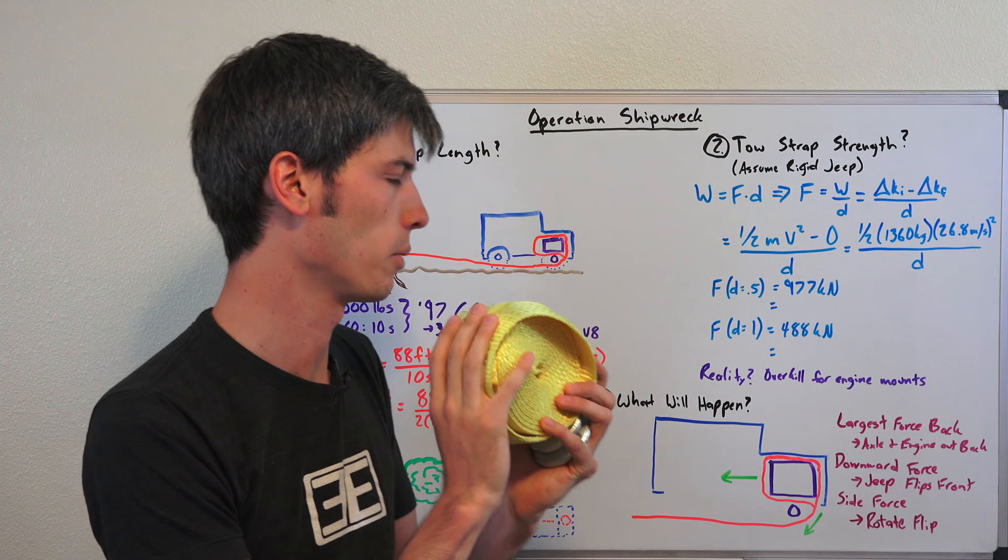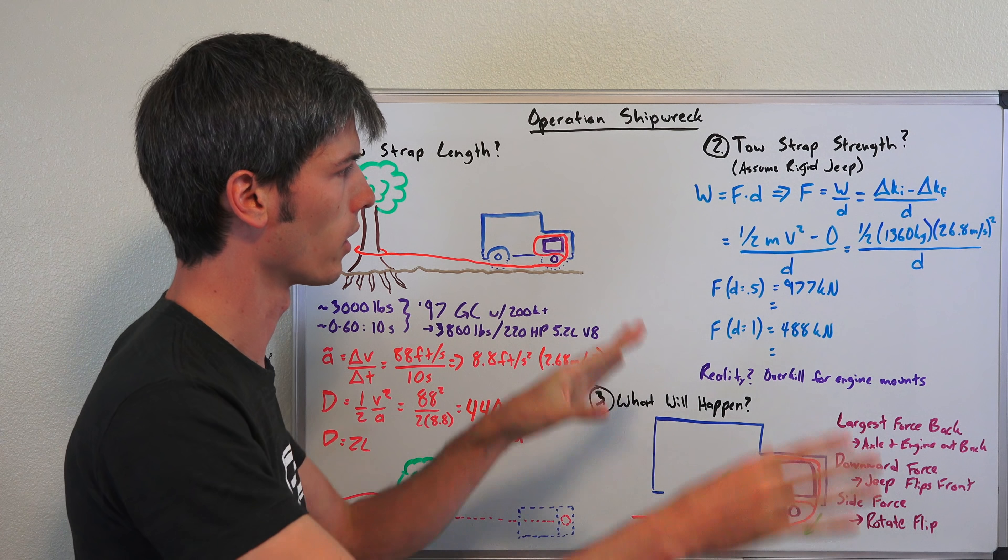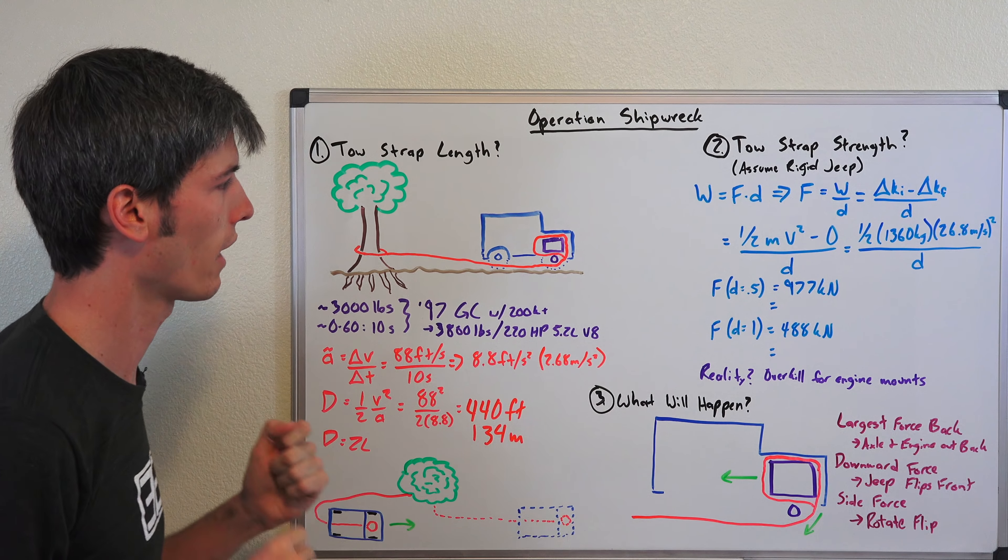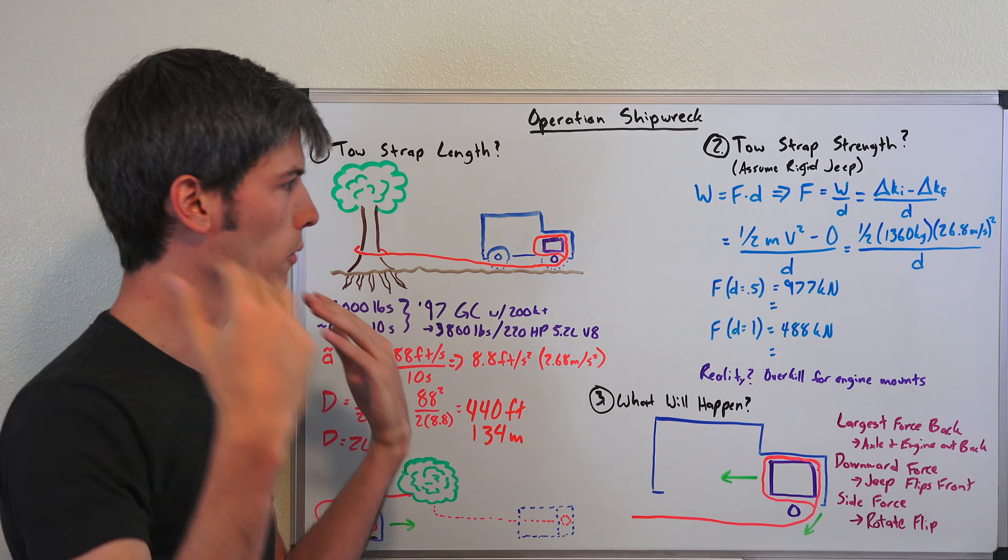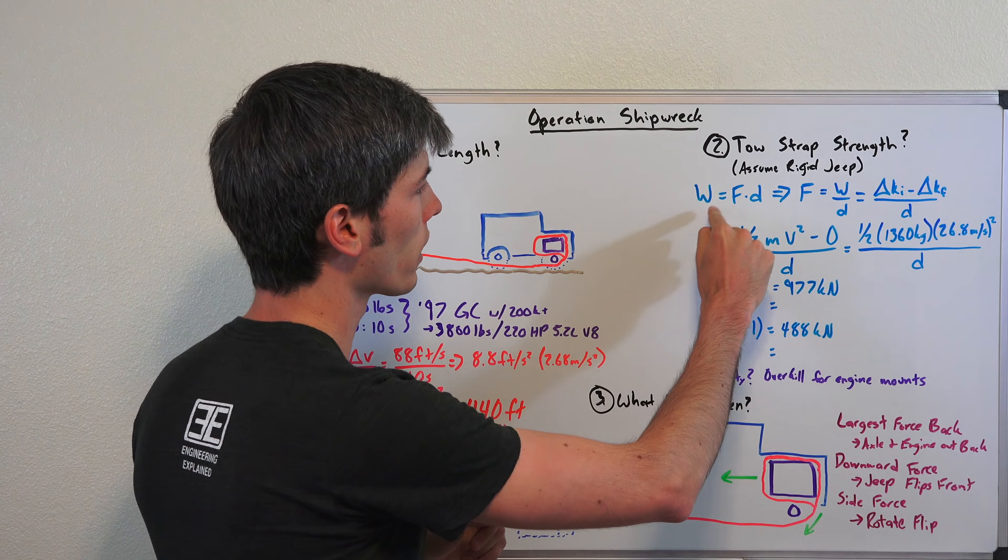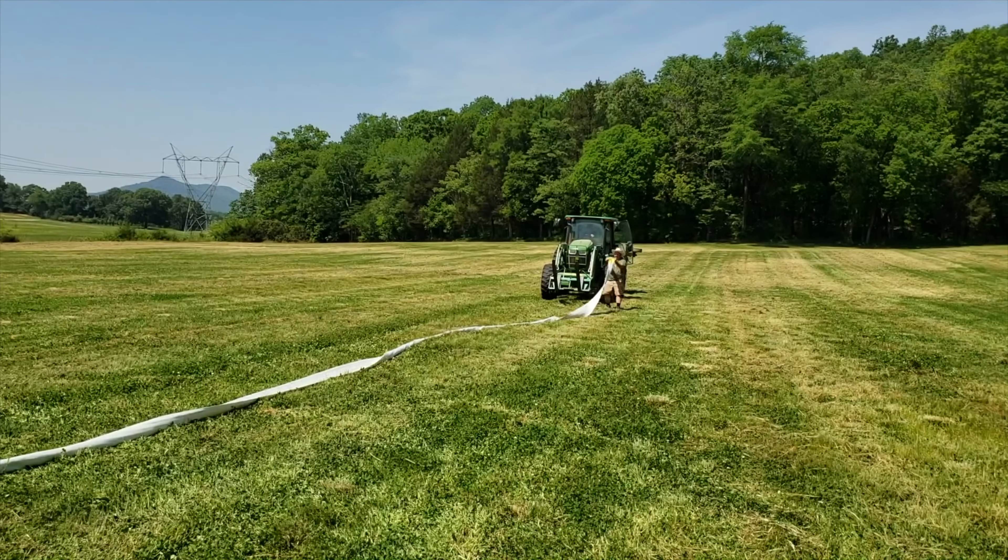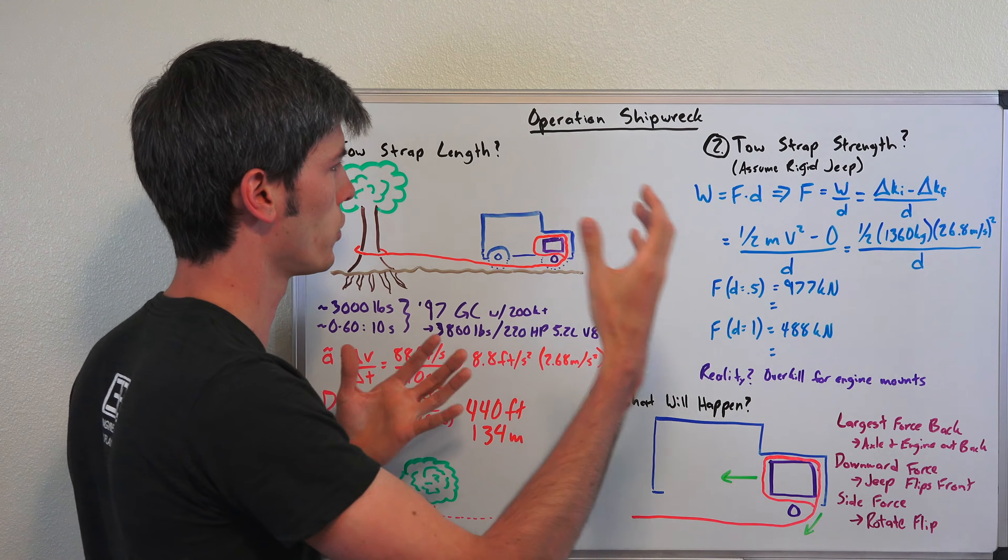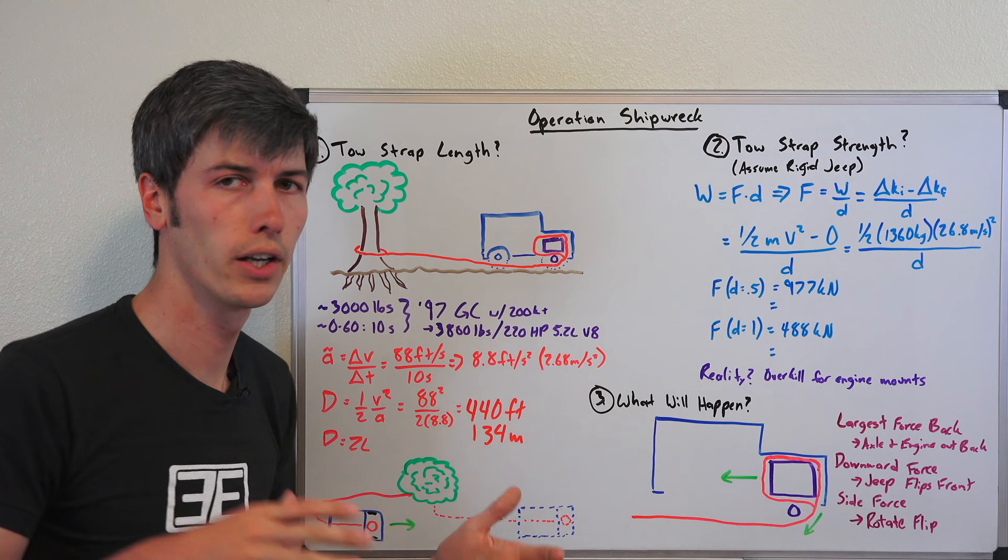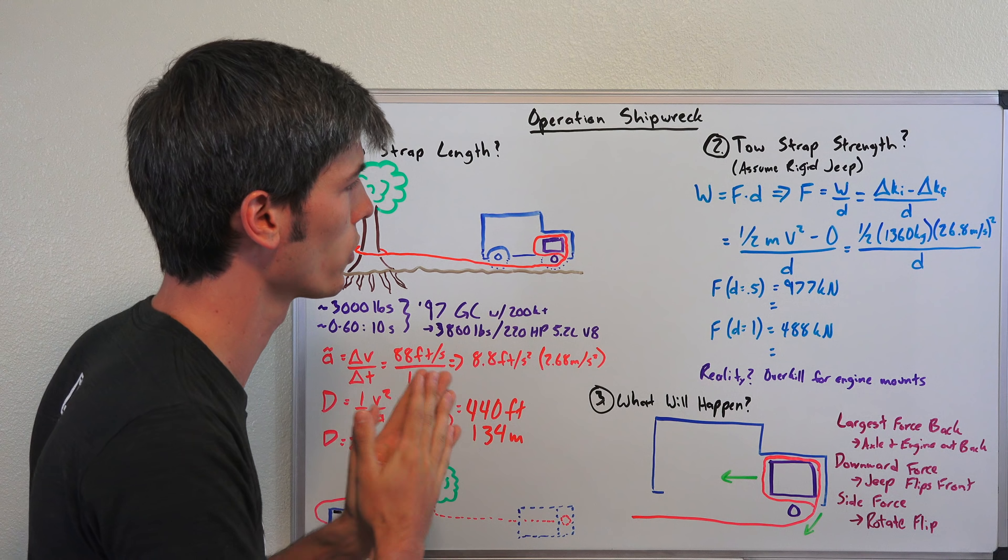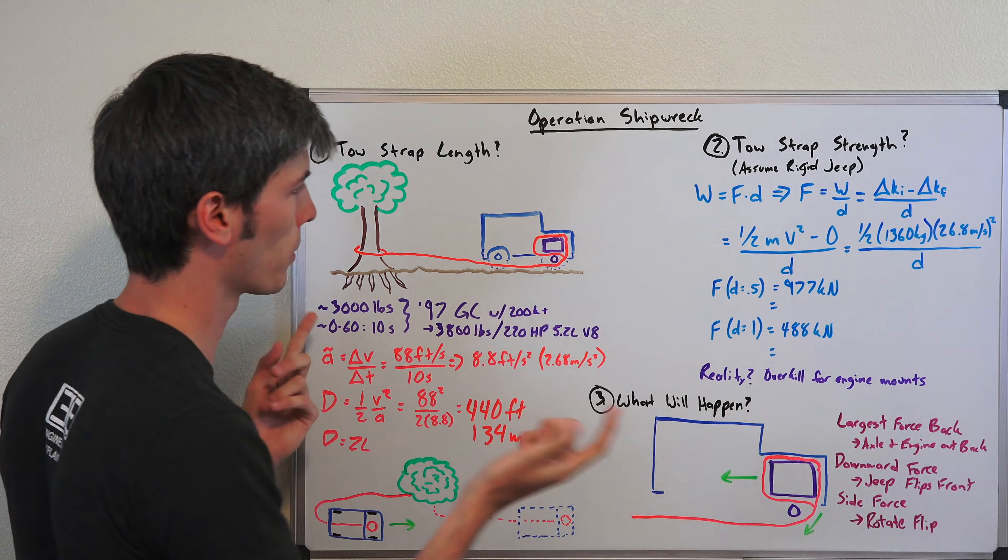Now we need to understand how strong the tow strap needs to be. We're going to assume that the jeep itself is perfectly rigid, and that's a stupid thing to assume because it's not true at all. But basically we need to figure out the force that that tow strap is going to have applied to it. We know that work is equal to force times distance. Work is equal to the change in kinetic energy. When the jeep is traveling at 60 miles per hour it has a certain amount of kinetic energy, and then it comes to a rest with no more kinetic energy.